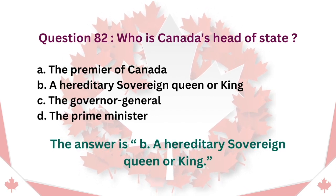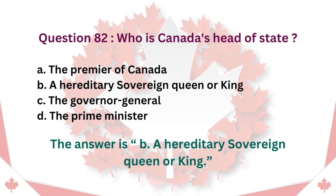Question 82: Who is Canada's Head of State? A. The Premier of Canada. B. A Hereditary Sovereign Queen or King. C. The Governor General. D. The Prime Minister. The answer is B. A Hereditary Sovereign Queen or King.